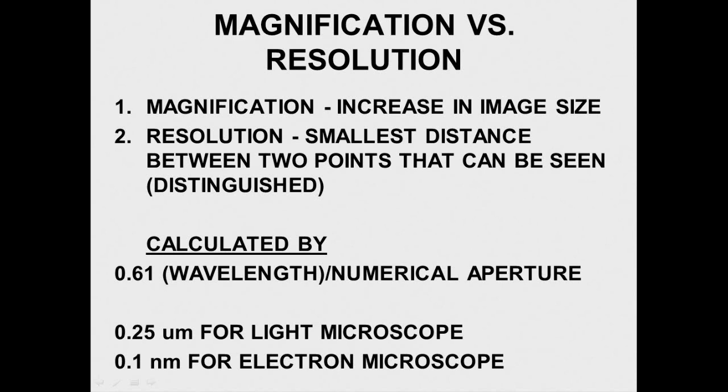But for electron microscopy it is much smaller, 0.1 nanometers. And that's due to the fact that the wavelength of electrons is much smaller. So if the wavelength of light is on the top of the equation and you've got a much smaller number, you're going to have a smaller resolution number.